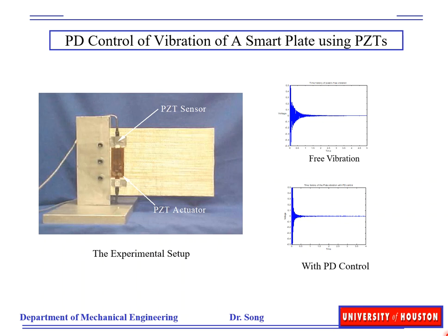In the previous two sections, we introduced feedback control, in particular the effect of P, I, and D. Here we will take a look at a couple of examples. It includes two PD controllers and one strain rate feedback control.